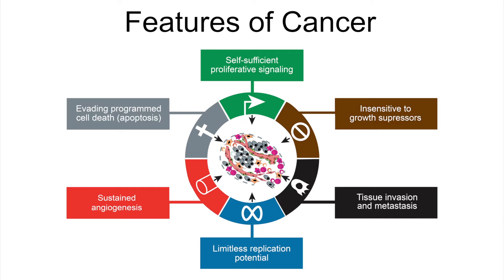The third is tissue invasion and metastasis. This is a property of cancer cells in that they're able to migrate and enter the blood vasculature and spread to other organs. So wherever the primary tumor formed, if it's left untreated long enough, secondary tumors will start to form in other regions of the body.